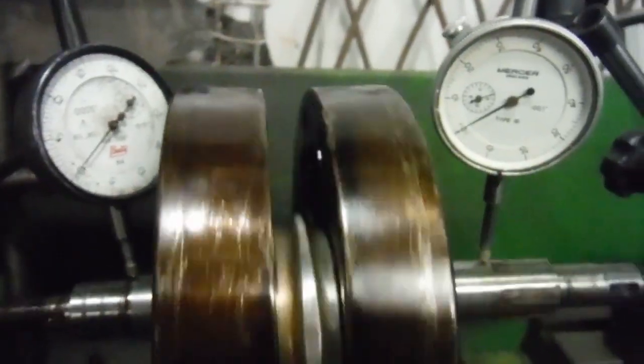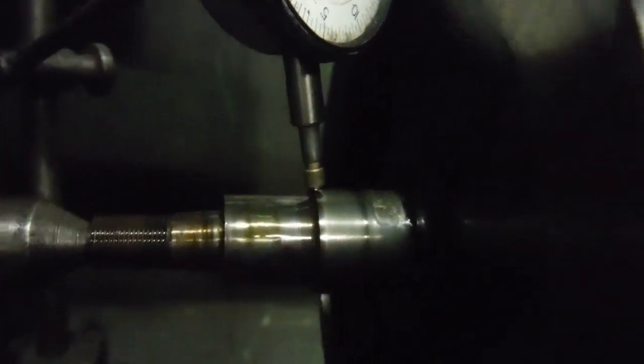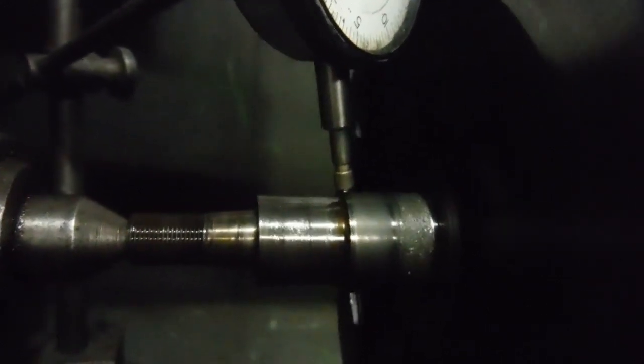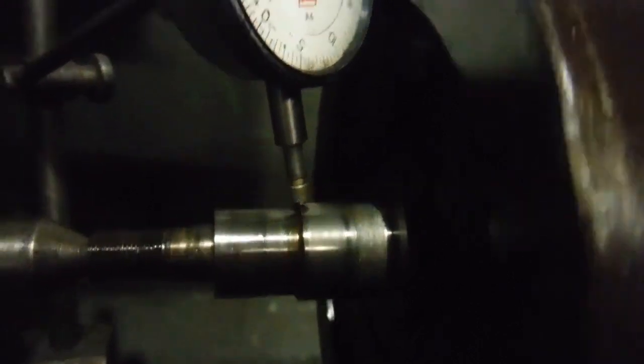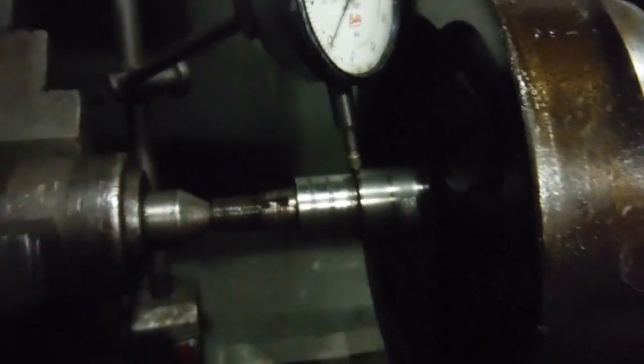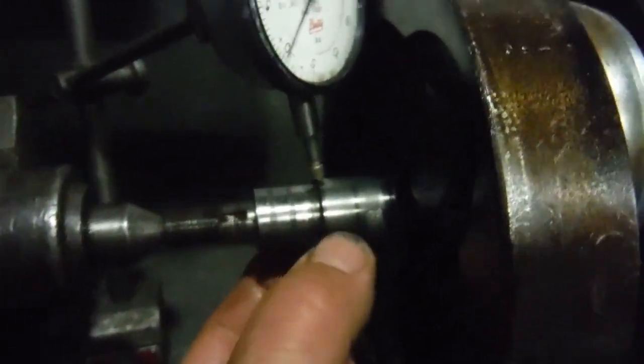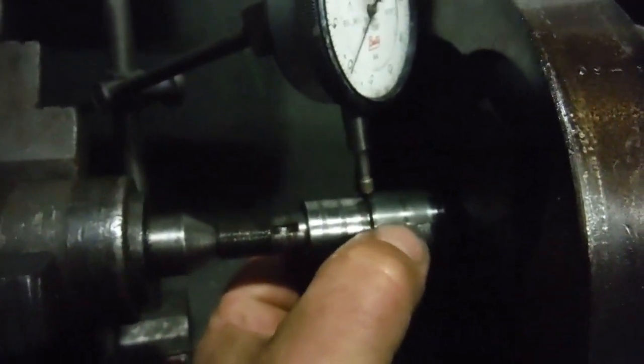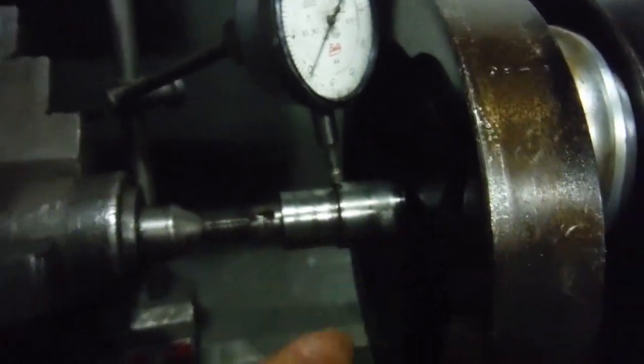It's actually worn through the hard surface, the hard bearing surface of the timing side main shaft, about a third of its circumference there. That won't be a problem when it's rebuilt because I'll be fitting a needle roller conversion to the crankcase on the timing side, and there'll be a tight fitting race pressed over that main shaft anyway, so that wear needn't be a worry anymore to us.